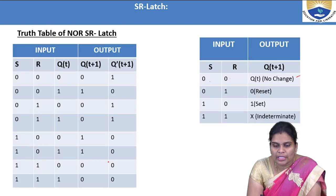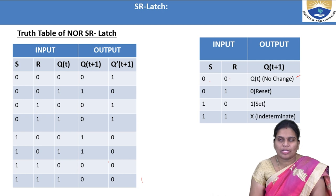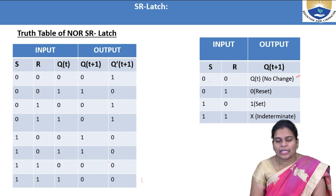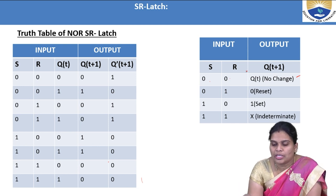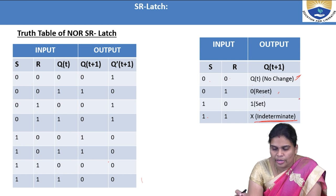This is the characteristic table for the SR latch using NOR gate. The inputs are S, R, and Q(t) (present state); the output is Q(t+1). When S=0, R=0 — no change of state; Q(t+1) = Q(t). When S=0, R=1 — reset; Q(t+1) = 0. When S=1, R=0 — set; Q(t+1) = 1. When S=1, R=1 — indeterminate state.